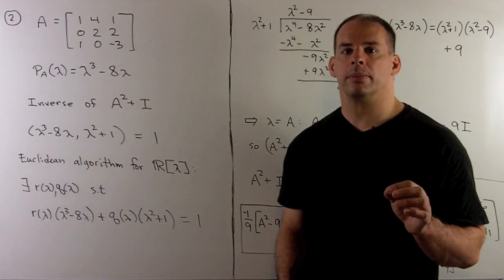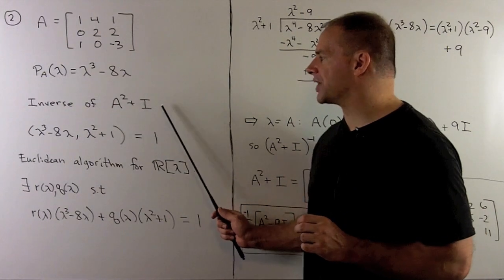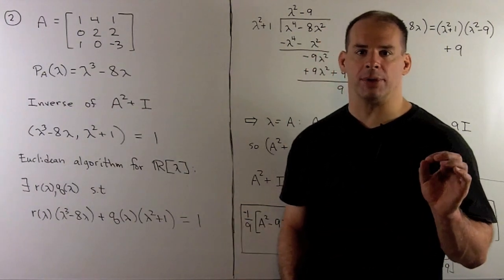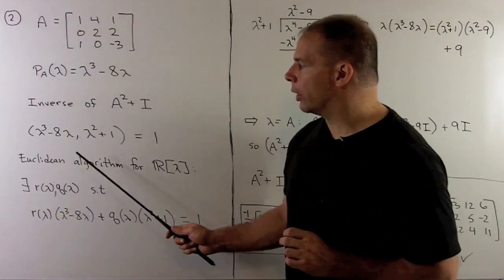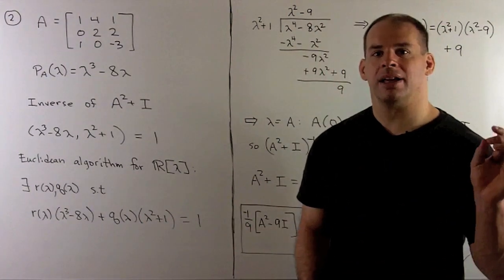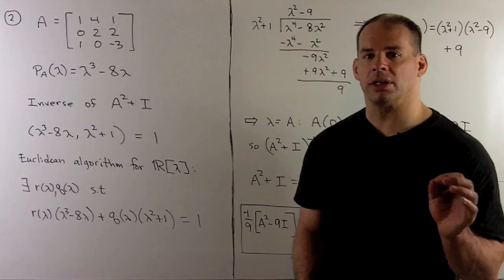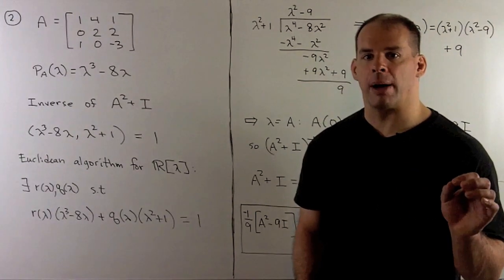For the second part, we want to find the inverse of A squared plus I using the Cayley-Hamilton theorem. Now, first we note, lambda cubed minus 8 lambda and lambda squared plus 1 are relatively prime, so there are no common factors.